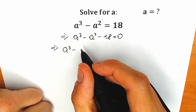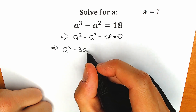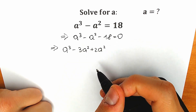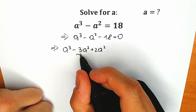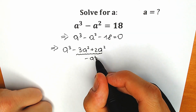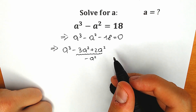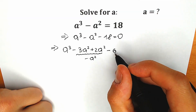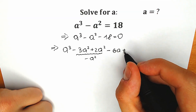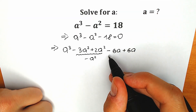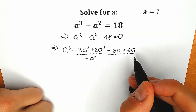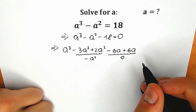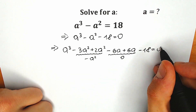Instead of the a squared term, I want to write the next expression: a cubed minus, instead of a squared, I write minus 3a squared plus 2a squared. Because when we add these together, they equal minus a squared, so basically it changes nothing. Then, since we don't have an expression with a, I want to write minus 6a plus 6a. We can easily cancel it, but this expression helps us factor a minus 3.